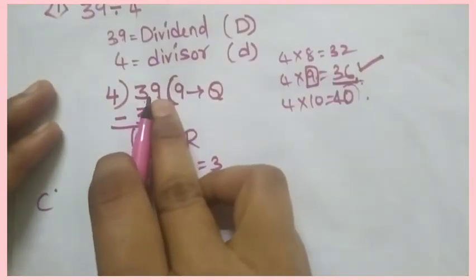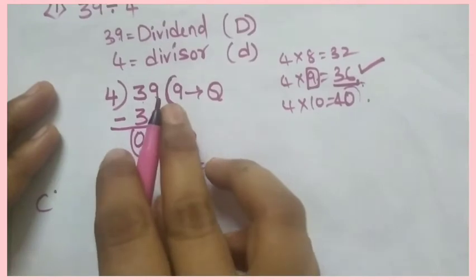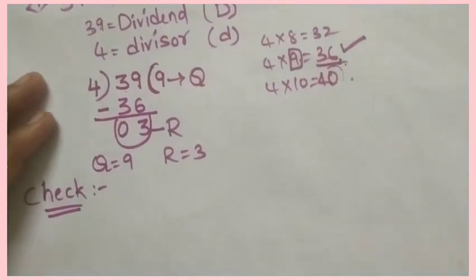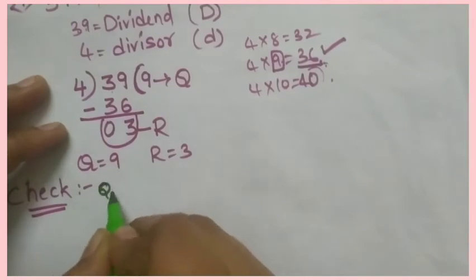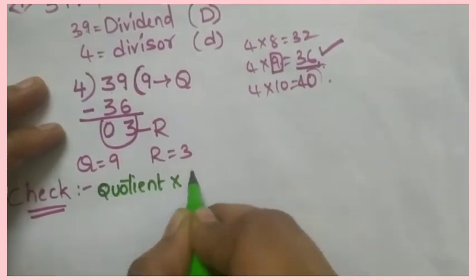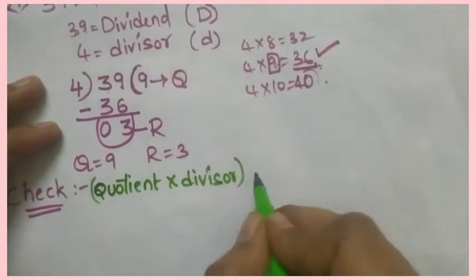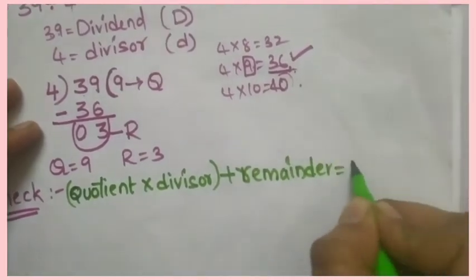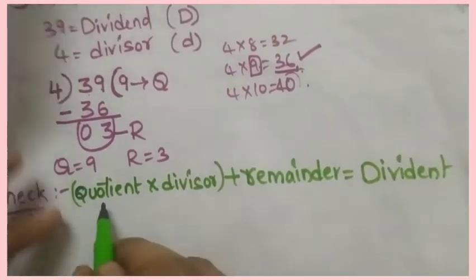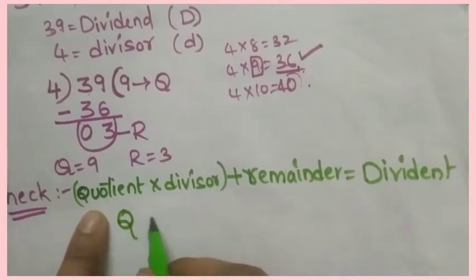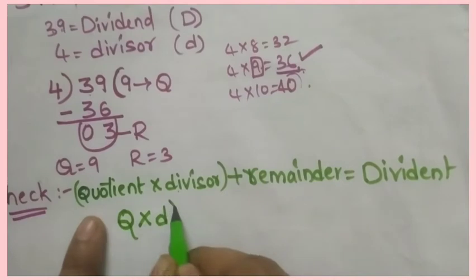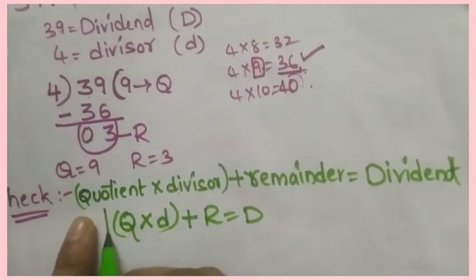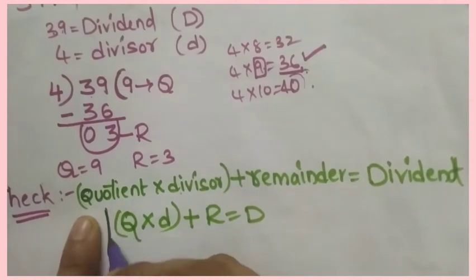Now, is this division correct or wrong? To know that, we will do a check. There is one formula for checking: quotient into divisor plus remainder is equal to dividend. That is: Q × d + R = D. This is the formula to check the answer.